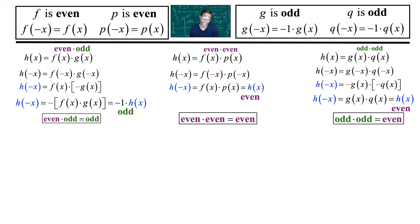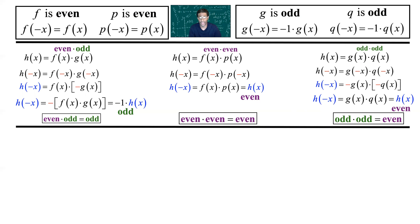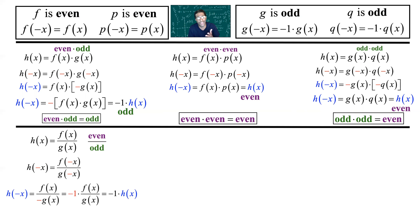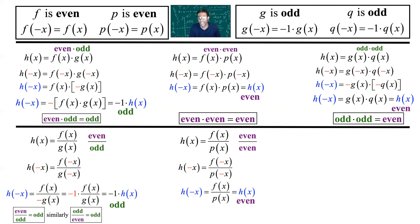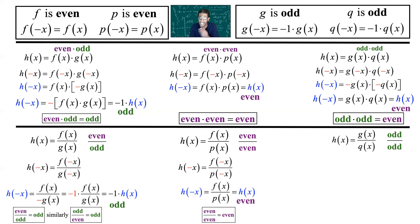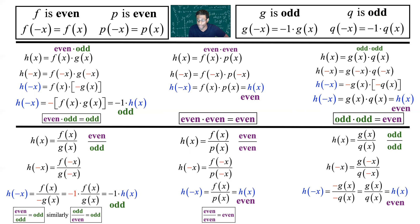The same holds for division. If you take f of x divided by g of x — even divided by odd, or vice versa — the negative 1 comes out of the denominator but not the numerator, so you get negative 1 times the original function: it's odd. Whether it's the product or the division of a mixture of even and odd functions, no matter the order, it comes back as odd. When they're the same — the product or division of even functions — f of negative x is f of x and p of negative x is p of x, back to the original: it's even. The quotient of odd functions is also even: the negative 1 comes out of each and cancels, leaving the original function.